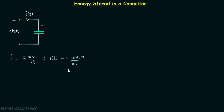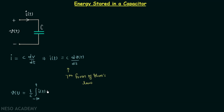This form is known as the seventh form of Ohm's law. From here we can derive the voltage: V(t) = (1/C) times the integration from minus infinity to t of I(t) dt. This form is our eighth form of Ohm's law.